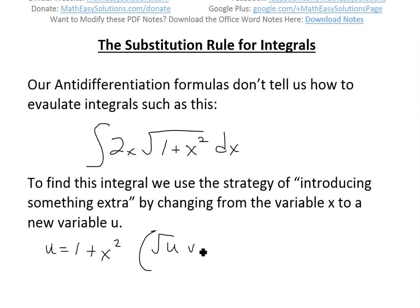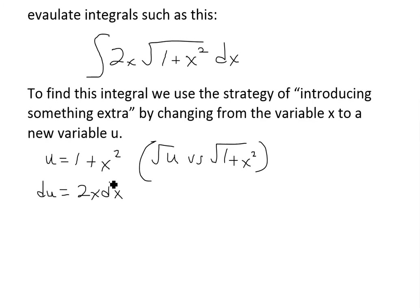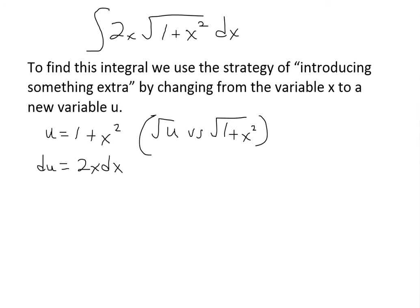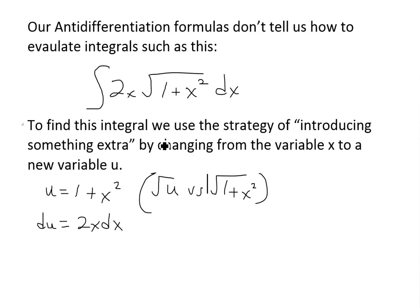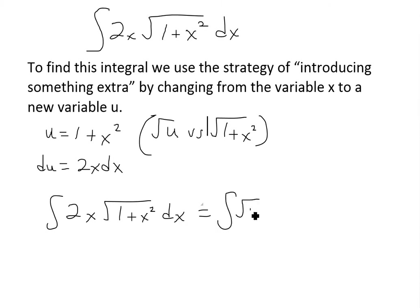To find this integral we can use a strategy of changing the variable x to a new variable u to simplify the function. We pick u to be 1 plus x squared, for the sole purpose of simplifying the square root — so we'll have square root of u instead of square root of (1 plus x squared). Then du equals 2x dx, and the 2x dx part of the integrand becomes just du, giving us the integral of square root of u times du.